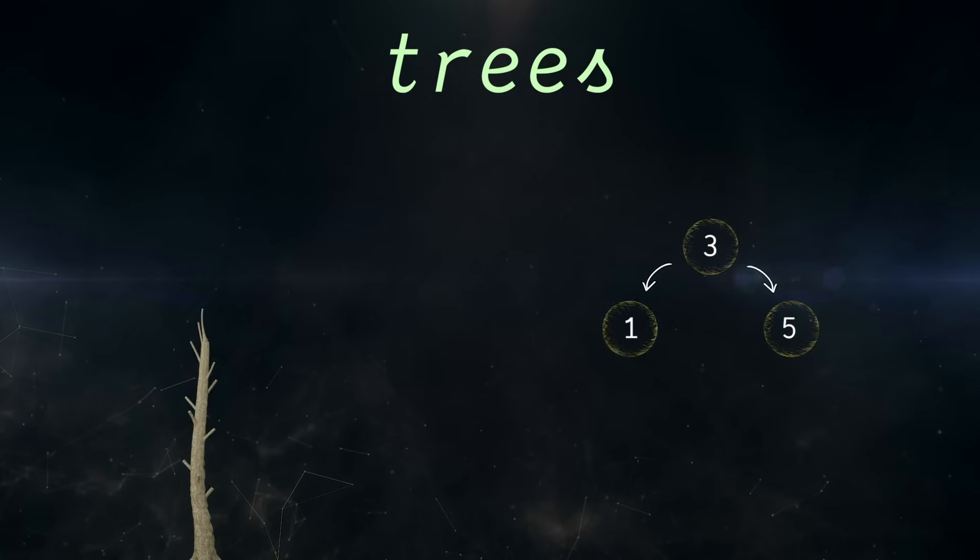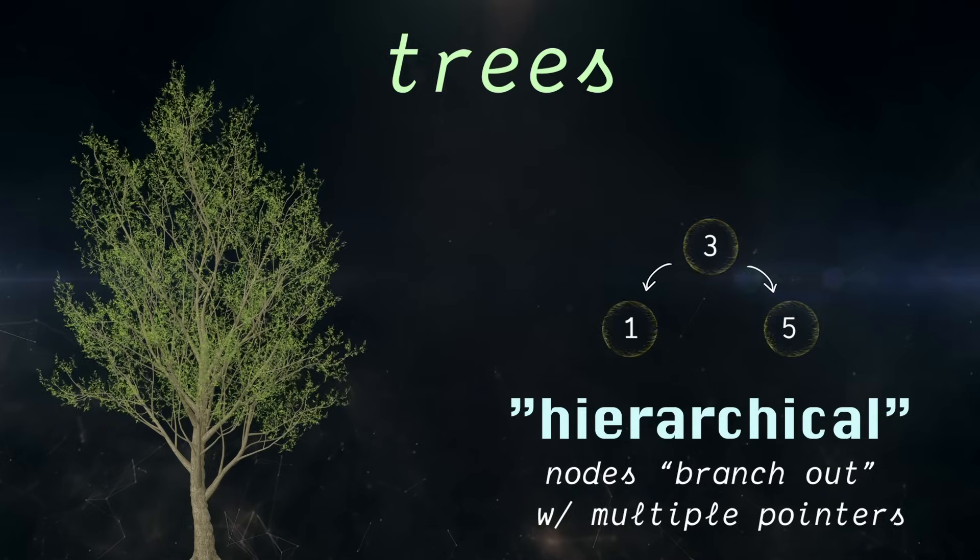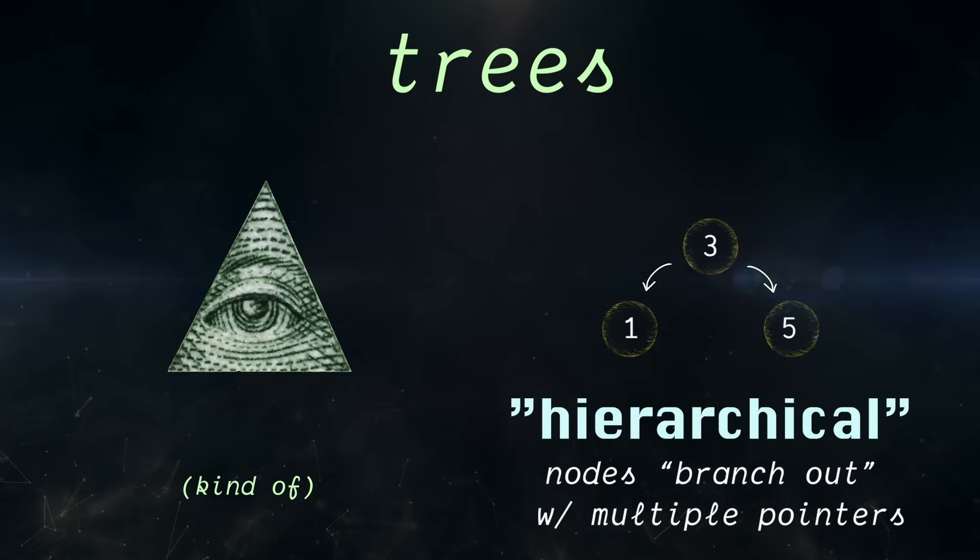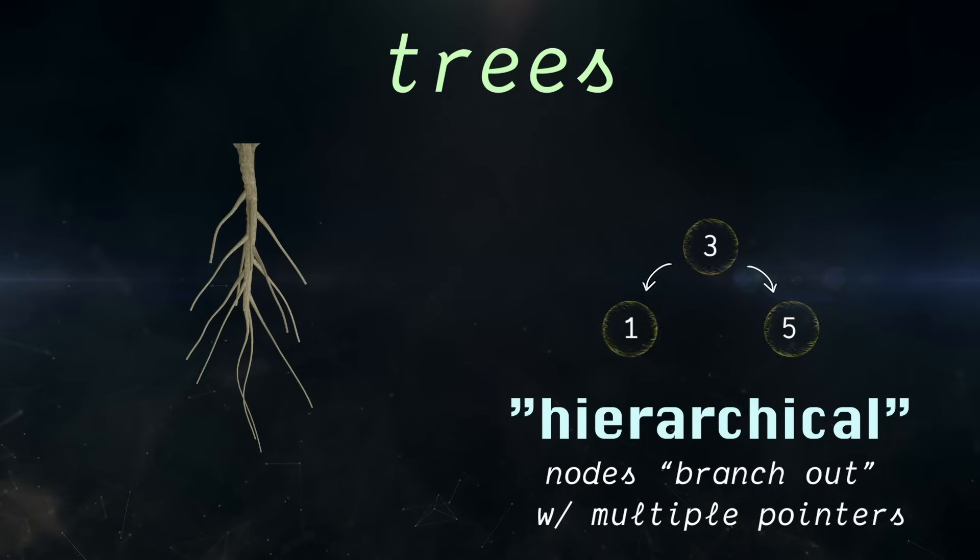That means nodes branch out in one direction with multiple pointers going from top to bottom. Most trees look more like a pyramid than a tree, but if you squint, you can see the tree if you flip it upside down. Let's get more precise. Trees expand in one direction, so that means no cycles.